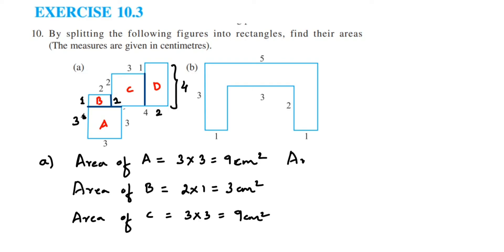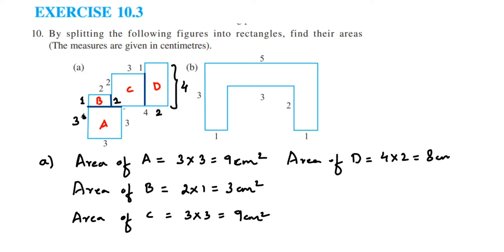The last shape is D. Area of D: it's a rectangle, with length 4 and breadth 2, so 4 × 2 = 8 centimeters squared.